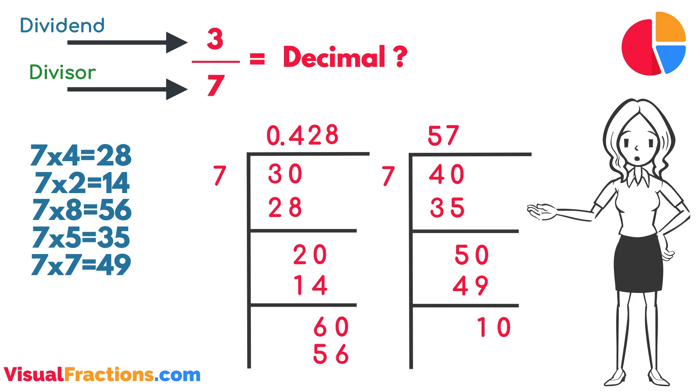Finally, adding another zero gives us 10. How many times does seven go into 10? Just one time. We add this one to our quotient, making it 0.428571. Subtracting seven from 10 leaves us with a remainder of three.